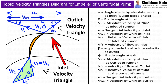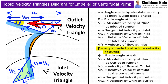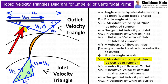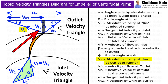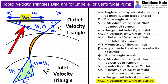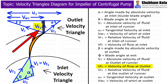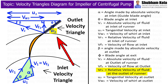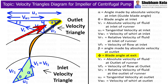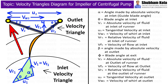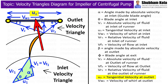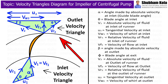Next, we draw the outlet velocity triangle. At the outlet, the fluid comes out at angle β with absolute velocity V2 in the direction of motion of the blade. V2 is divided into two parts: the horizontal part Vw2, which is the velocity of whirl at outlet, and the vertical part Vf2, which is the velocity of flow at outlet. The relative velocity of fluid at outlet is Vr2, drawn as an inclined line at angle φ, known as the blade angle at exit. Connecting this point with the end of the V2 line gives U2, the velocity of blade at outlet. This completes the outlet velocity triangle for the impeller.